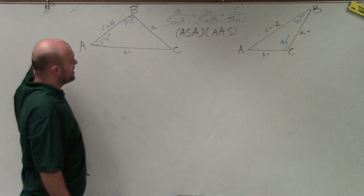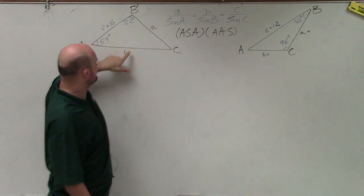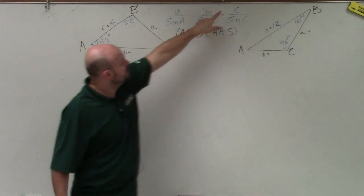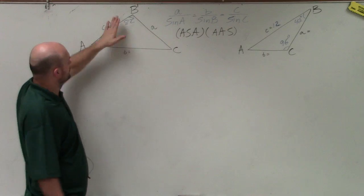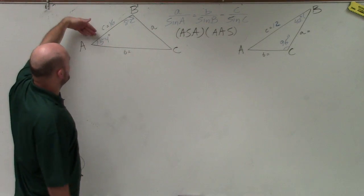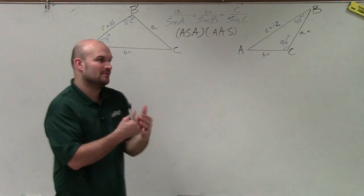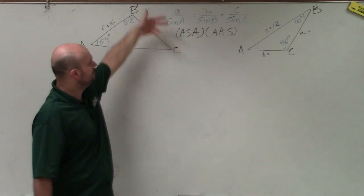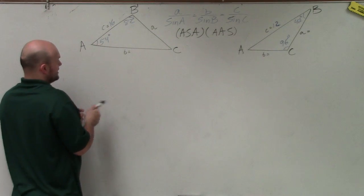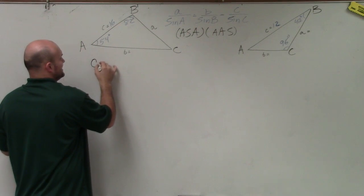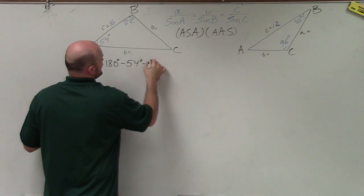When you look at an angle-side-angle problem, we don't have any complete ratios. We have angle B but not side length b; we have side C but not angle C; and we have angle A but not side length a. Uppercase letters are angles and lowercase are side lengths. Since all angles add up to 180, I can write: C equals 180 degrees minus 54 degrees minus 82 degrees.